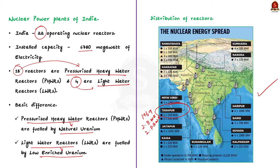The largest nuclear power plant in India is the Kudankulam nuclear power plant, located in Tamil Nadu, with an installed capacity of 2,000 MW. Kakrapur Atomic Power Station is India's first indigenously developed nuclear reactor, situated in Gujarat, with 700 MW of pressurized heavy water reactor capacity. So these are the important nuclear reactors of India.